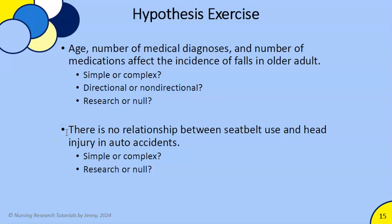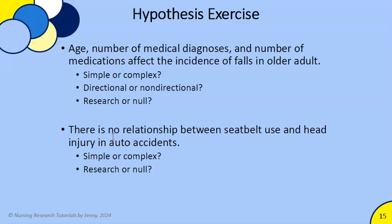Next example: 'There is no relationship between seatbelt use and head injury in auto accidents.' Auto accidents is the population — a constant, not a variable. The variables are seatbelt use and head injury — one and one, so it's simple. And because it states there is 'no relationship,' this is written as a null hypothesis. That makes it simple and null.